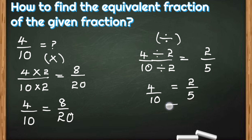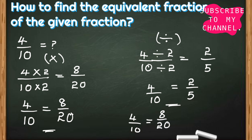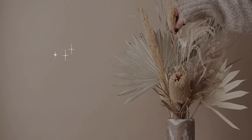So 2 by 5 is the equivalent fraction of 4 by 10, found using the division method. All three fractions — 4 by 10, 8 by 20, and 2 by 5 — are equivalent fractions of each other. You can use either the multiplication method or the division method; when division is not possible, use the multiplication method.